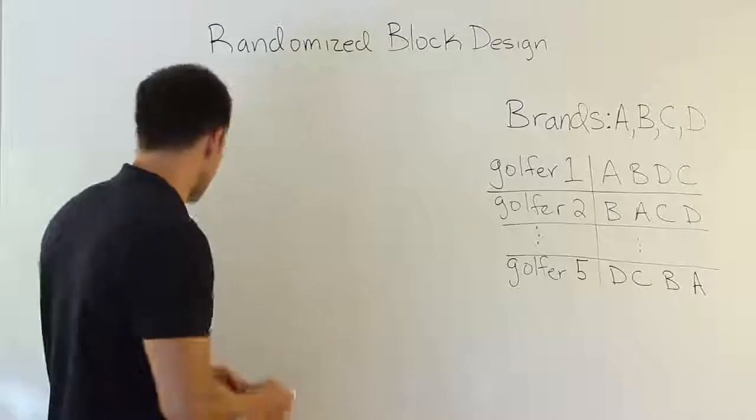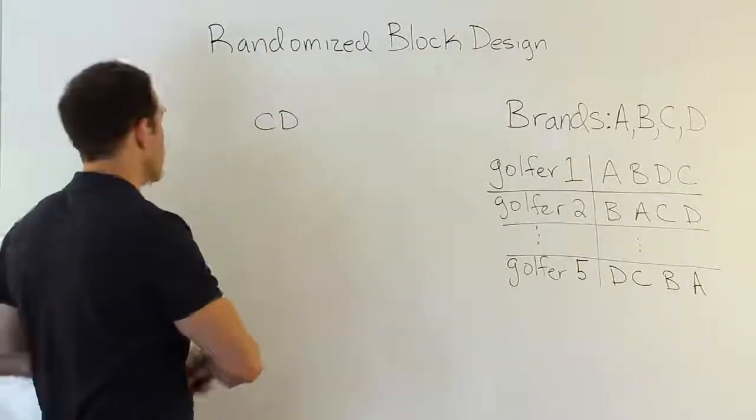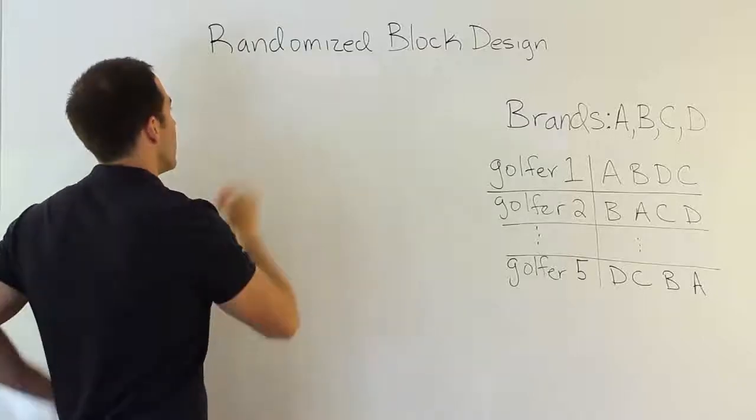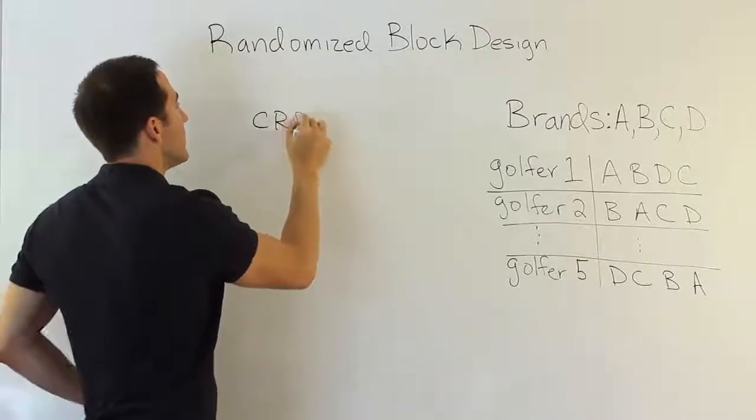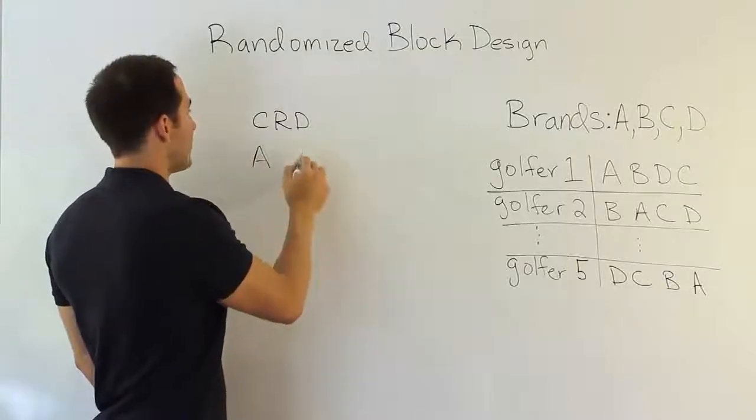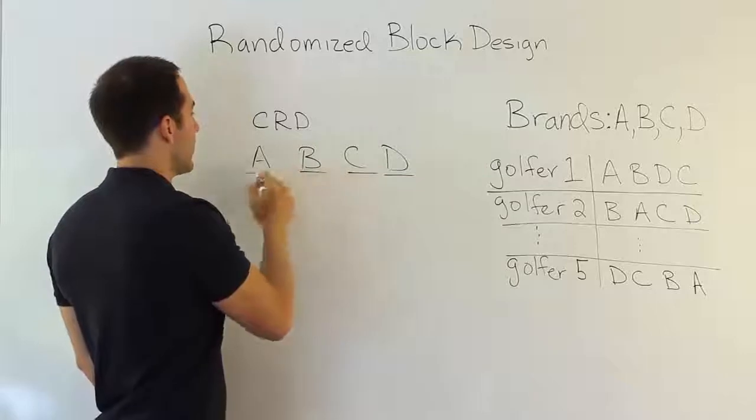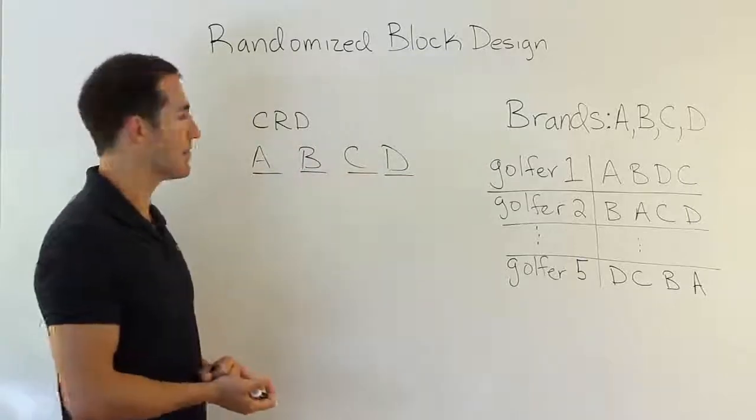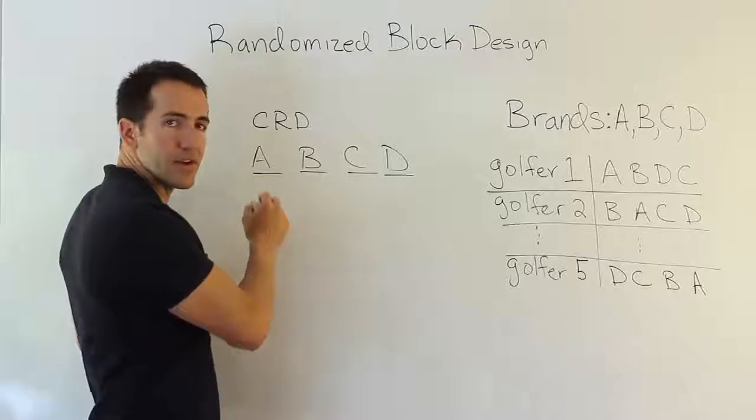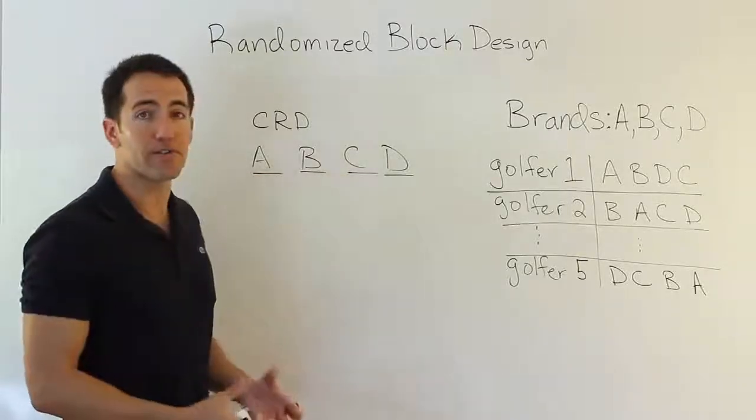If we use the completely randomized design, the CRD experiment that we had before, in that sort of scenario we laid out the treatments. We had treatment A, B, C, D. The treatment here would be the golf balls, the things that we're going to test to see if they work. And then we'd apply experimental units to that. In this case we might apply golfers to it.